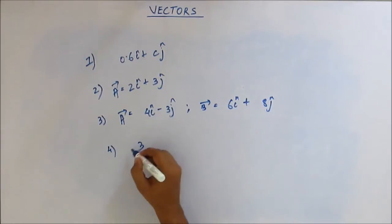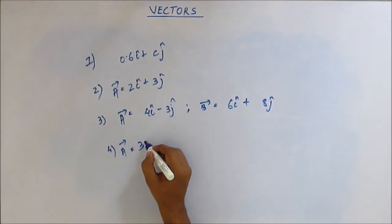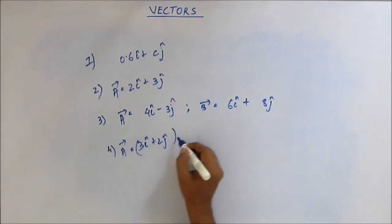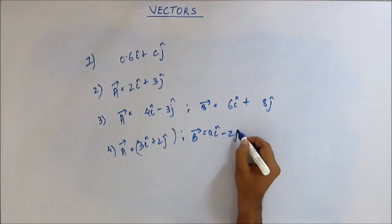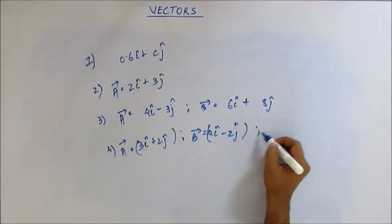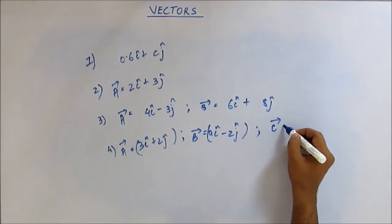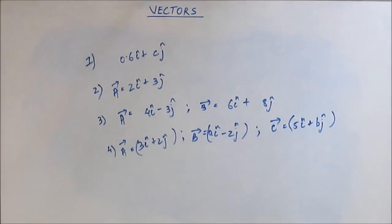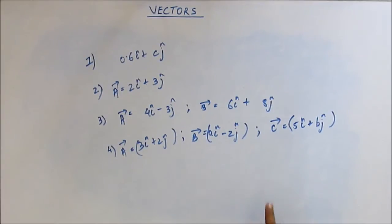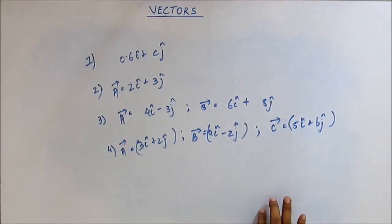Question number 4: there are 3 vectors. A vector = 3i cap + 2j cap, B vector = Ai cap minus 2j cap. Now suppose these 3 vectors represent forces in Newtons. These 3 forces are acting on a body, they are the only 3 forces acting on it, and the body is at rest. Find the value of A and B.